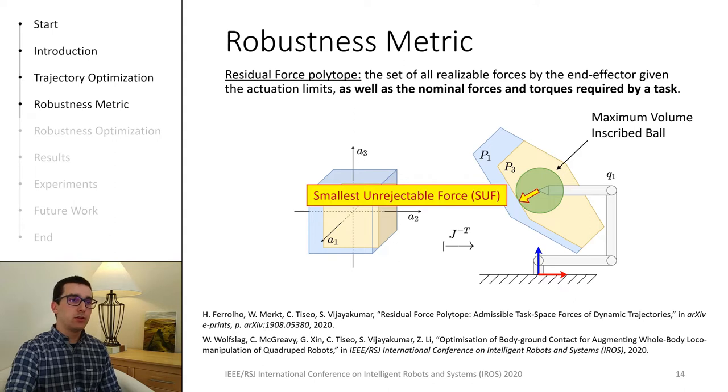We can take this metric and integrate it in our optimization problem as an objective function, and that's how we maximize the robustness of trajectories. In this diagram, the polytope was defined for a fixed base manipulator, but we can also define it for floating-based systems, and include friction cone constraints in addition to the actuation limits.